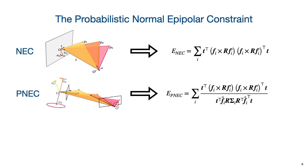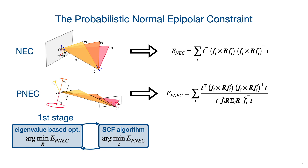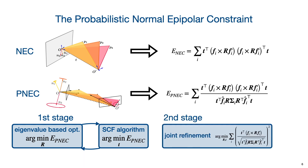Given that the variance of the residual is dependent on the rotation and translation between both images, the rotation optimization cannot be decoupled from the translation for the PNEC. However, we propose an effective two-stage optimization scheme for relative pose estimation. The first stage alternatingly optimizes over the rotation, reusing the eigenvalue-based optimization of the NEC, and the translation, which represents an actively studied problem in the form of generalized Rayleigh quotients. The second stage is a joint refinement over the complete pose using a least squares formulation of the PNEC.